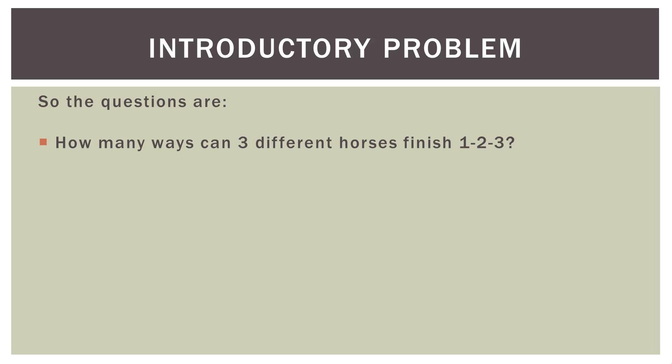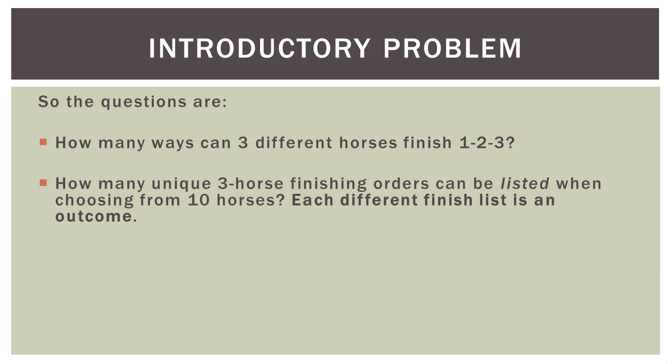So the questions are: how many different ways can three horses finish 1-2-3, and how many unique three-horse finishing orders can be listed when choosing from 10 horses? Each different finishing list is an individual outcome. So if horses 1, 2, and 3 finish, that's one outcome; horse 2, 1, 3 is different; horse 3, 2, 1 is different. Even though it's the same three horses, each unique ordered list is a different permutation.